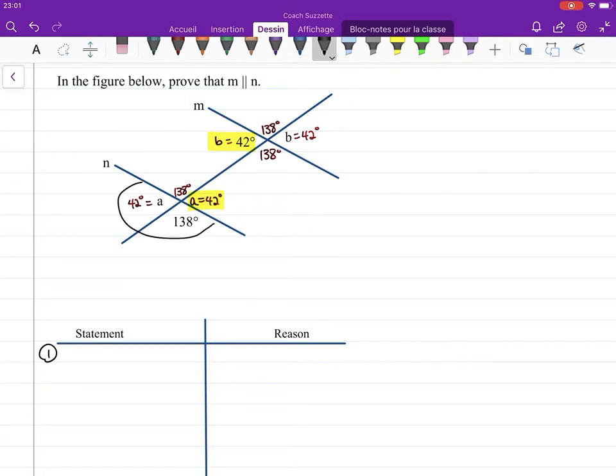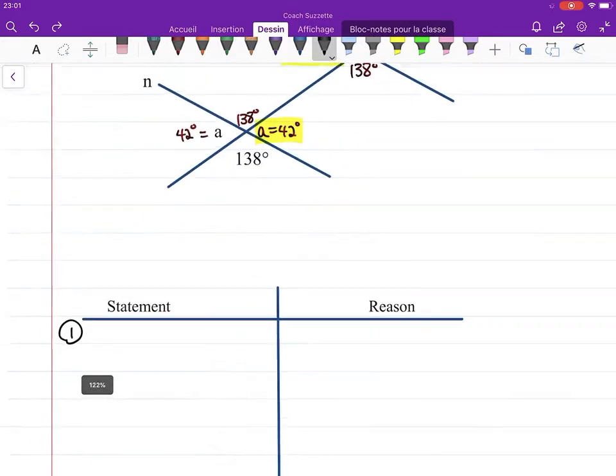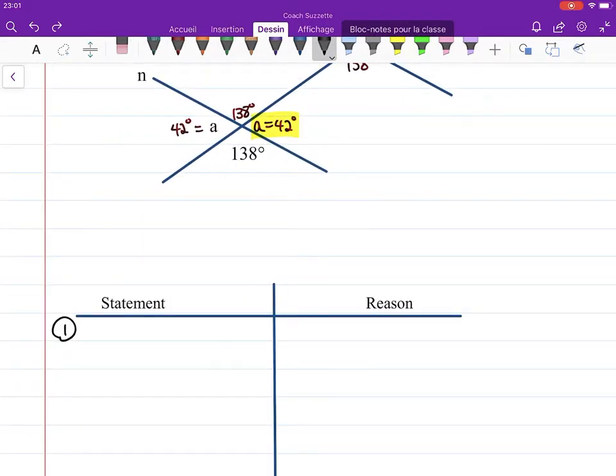Linear pairs form supplementary angles, so measure of angle a plus 138 degrees equals 180 degrees.